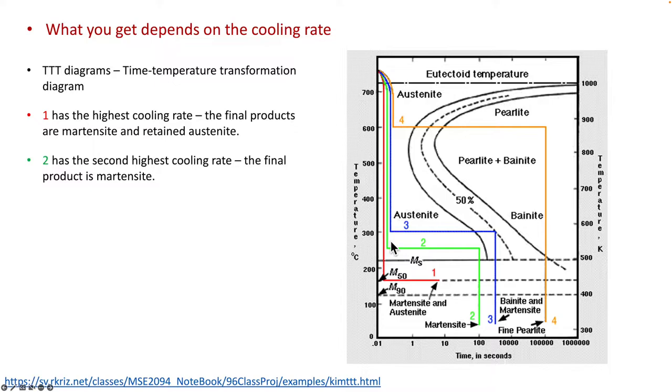In the second example, the green curve, there's also a decrease in temperature. But here, it's still in the austenite regime and it remains here for a long time and hits the 50% line. What this 50% line tells us is now that's 50% bainite and 50% retained austenite.